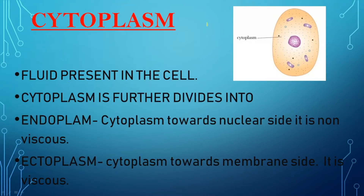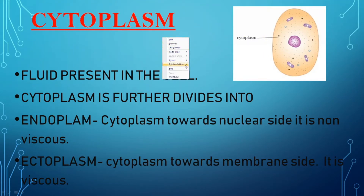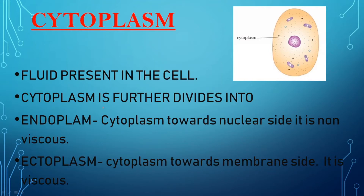As you see in this diagram, cytoplasm is basically the fluid content that is present inside the cell. This cytoplasm is further divided into two categories: one is endoplasm and one is ectoplasm.